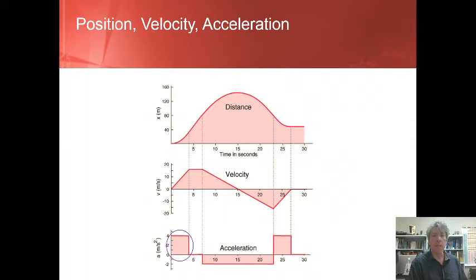Since the velocity of the object began at 0 meters per second, the velocity at 4 seconds must be 16 meters per second. The acceleration is 0 for the next segment, meaning that the velocity does not change during this time.